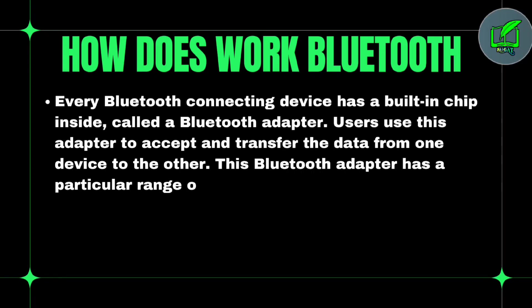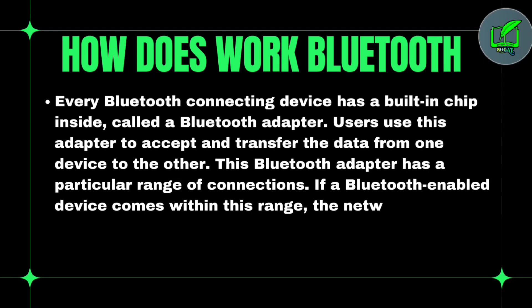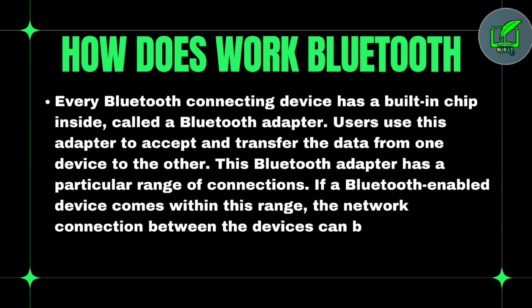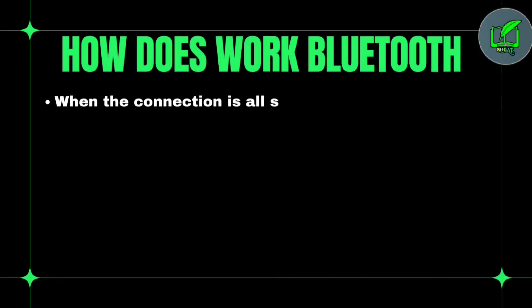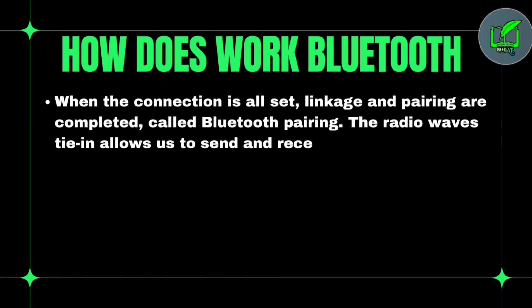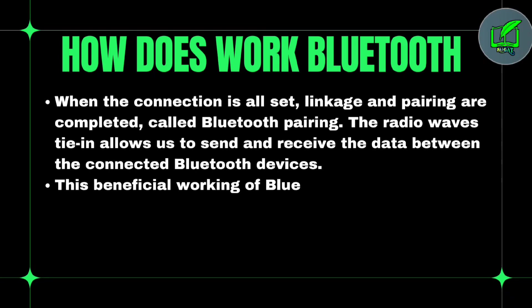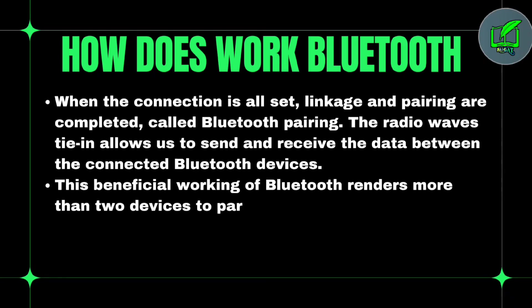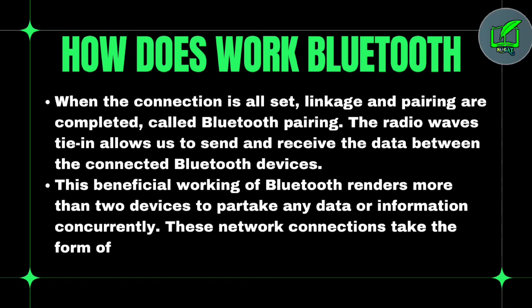Users use this adapter to accept transmitted data from one device to another. This Bluetooth adapter has a particular range of connection. If a Bluetooth device and another device come within this range, a network connection between them becomes possible. When the Bluetooth connection is set up, the linkage and pairing are complete, called Bluetooth pairing. The radio waves allow us to send and receive data between connected Bluetooth devices. When a network connection handles data from more than two devices, it is called a Piconet.